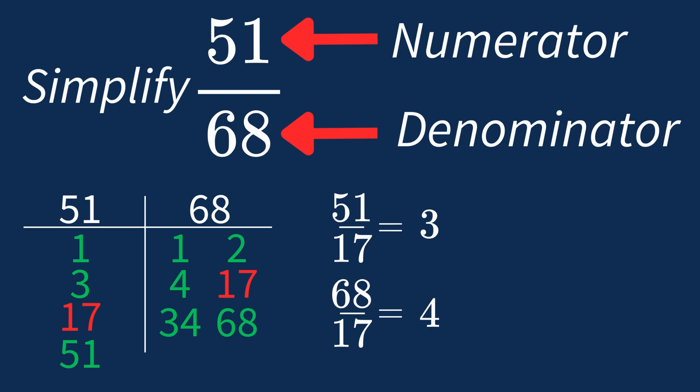So after dividing, the simplified fraction is 3 over 4. And we know that 3 over 4 is in its simplest form, because the only common factor between 3 and 4 is 1. And when 1 is the largest common factor, we know that our fraction has been simplified.